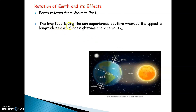The longitude facing the sun experiences daytime, whereas the opposite longitude experiences nighttime, and vice versa. The half part of the earth facing the sun will experience daytime, and at the same time the opposite part of the earth will receive nighttime, and vice versa.